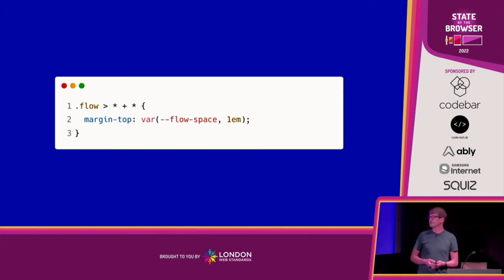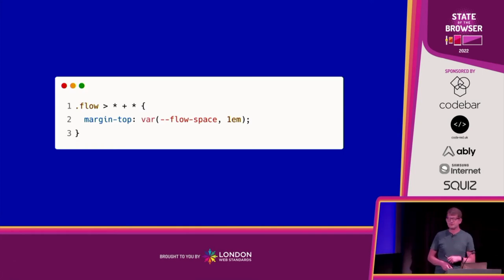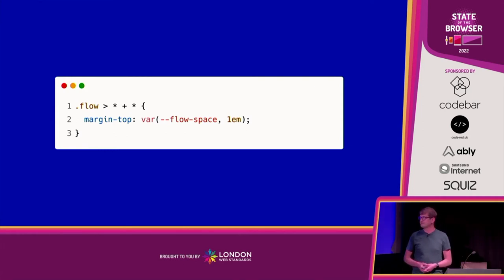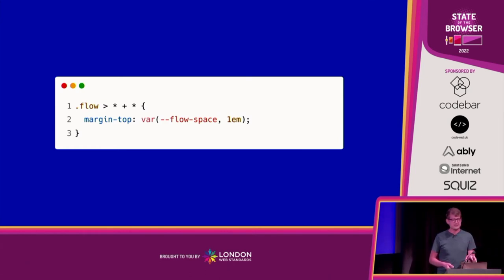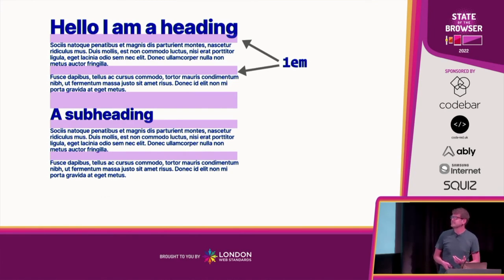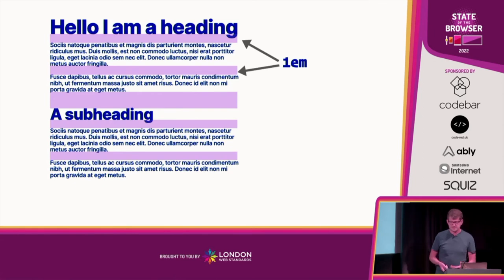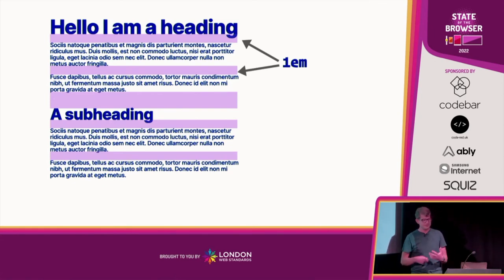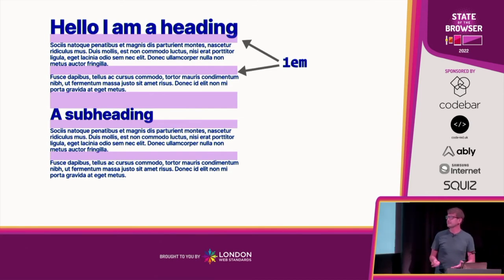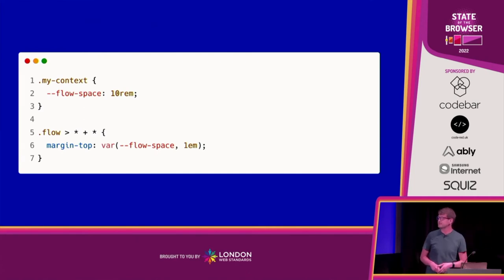The most important part of this rule is how we use custom properties. We're looking for a custom property called `--flow-space`. We haven't defined it anywhere yet, so we provide a fallback — in this instance `1em`. That means if I apply this utility, it'll work completely off the rendered font size of the element getting the margin. You can see paragraphs have reasonably tight space, but a subheading with a larger font size gets more margin because it's em-based — giving you natural flow and rhythm.